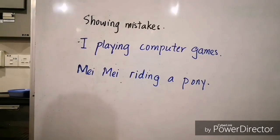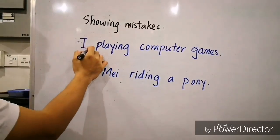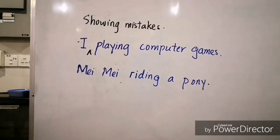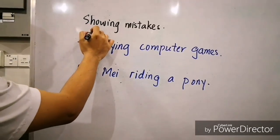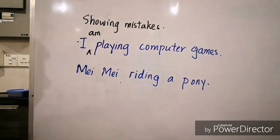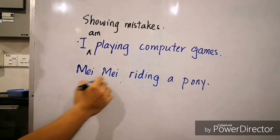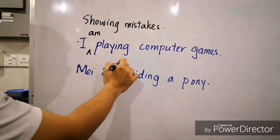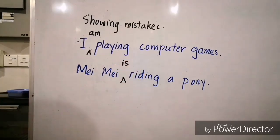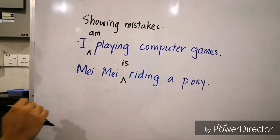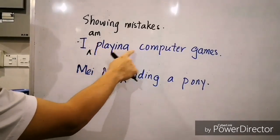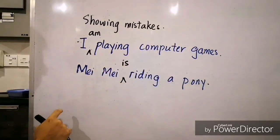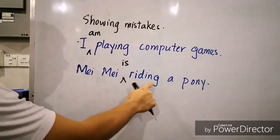Did you find out the mistakes? Where is the mistake? Here you are. What is the missing word? The answer is 'am'. So where is the second mistake? Here. What is the missing word? It's 'is'. I want you to read the correct sentence: I am playing computer games. Mei Mei is riding a pony.